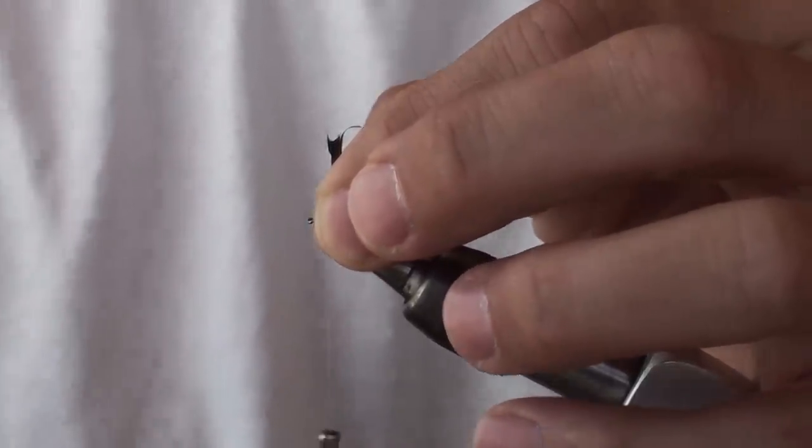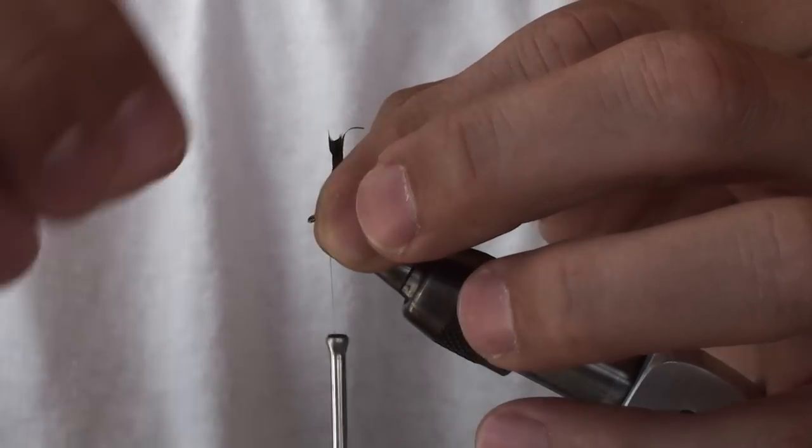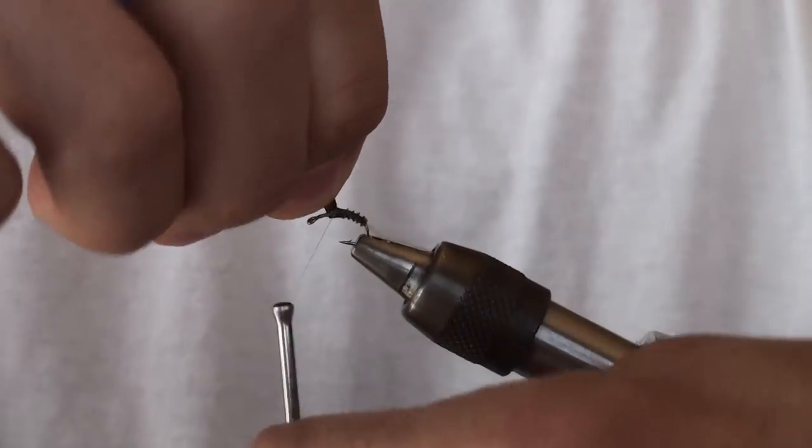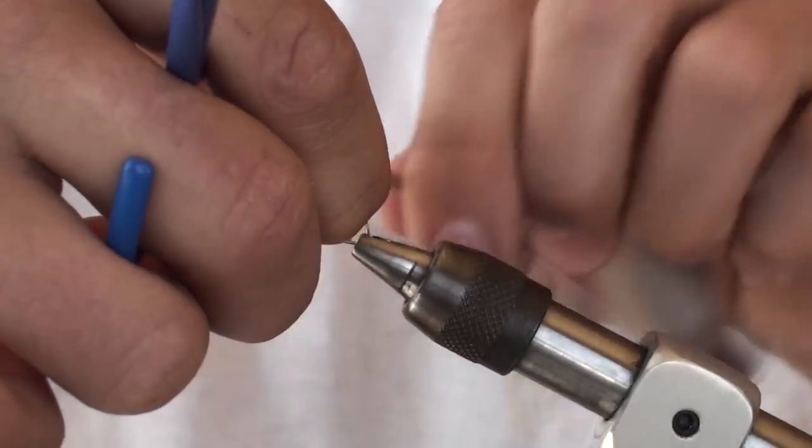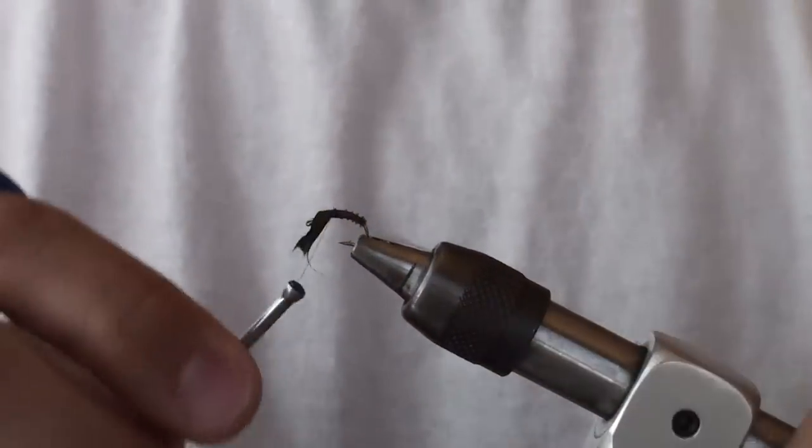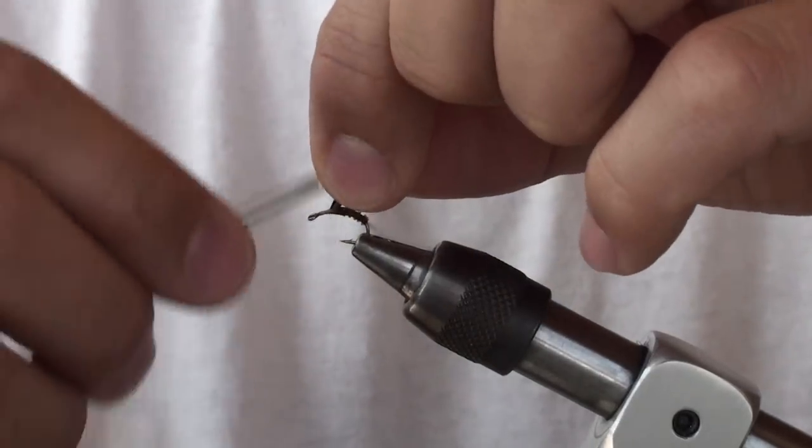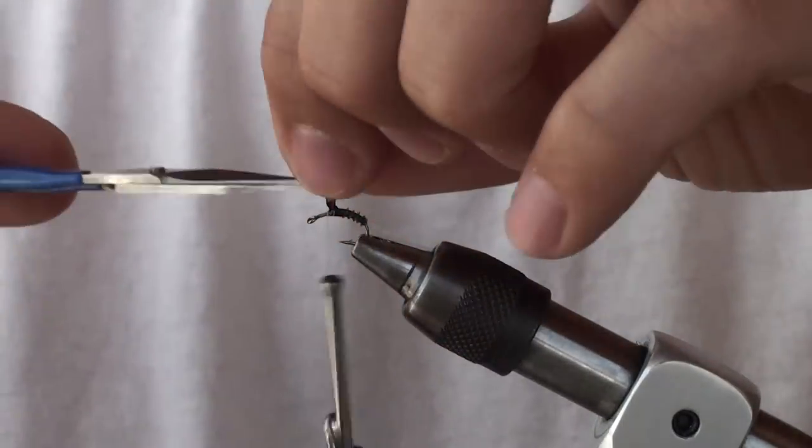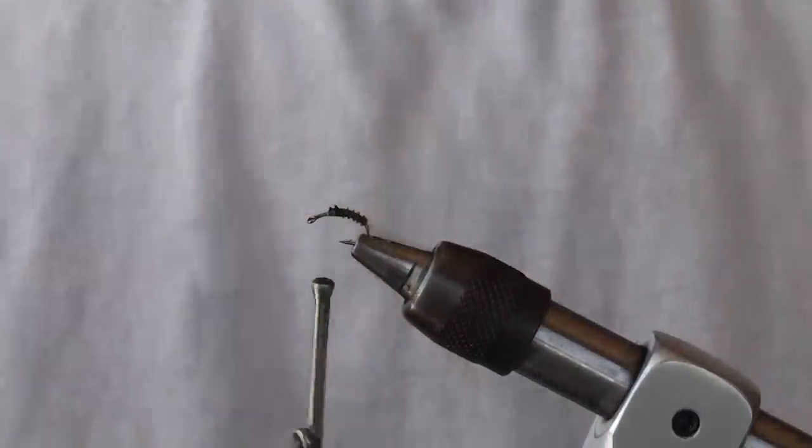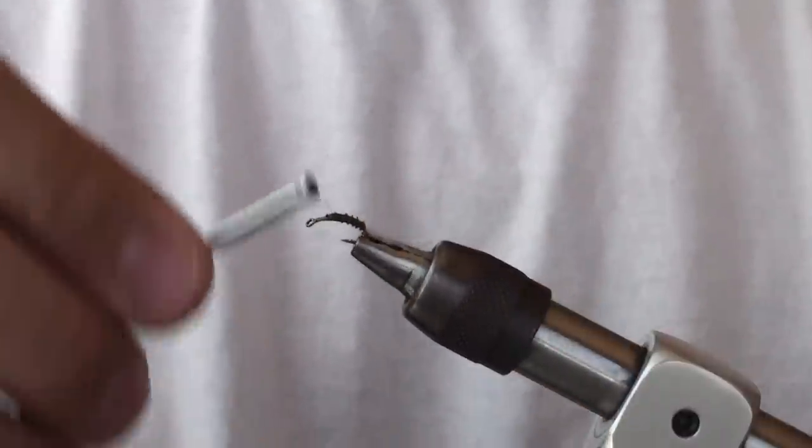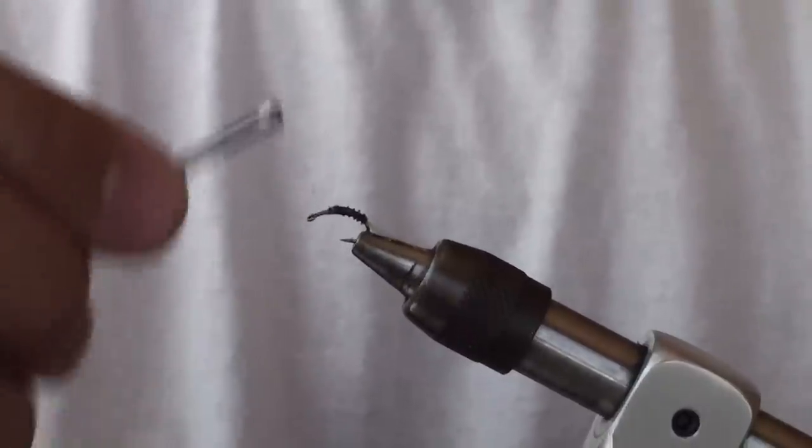Move my bobbin cradle out of the way. Holding the biot straight up, I can take my thread and bind it down. Now I can clip off the remaining part of the biot and continue wrapping, creating a smooth underbody there, wrapping all those loose edges down.